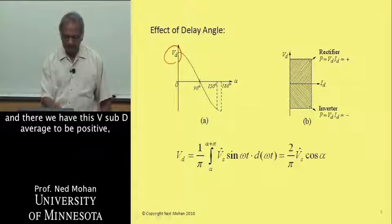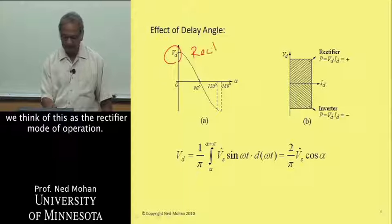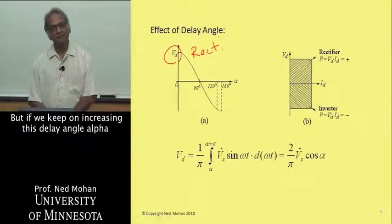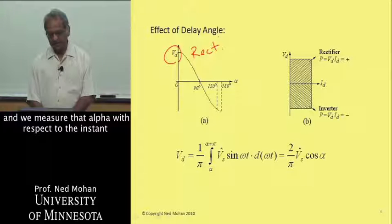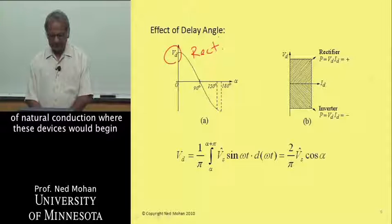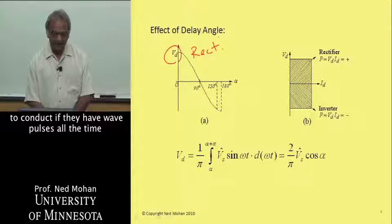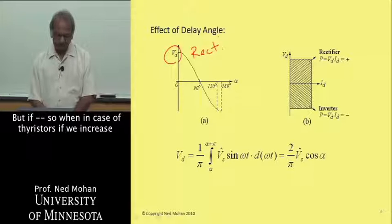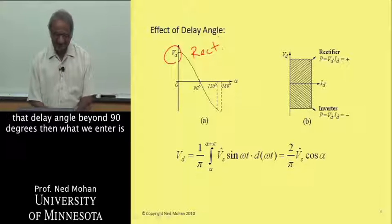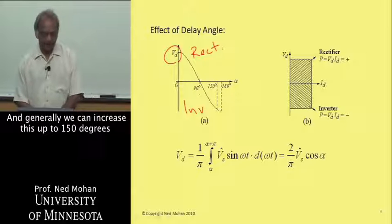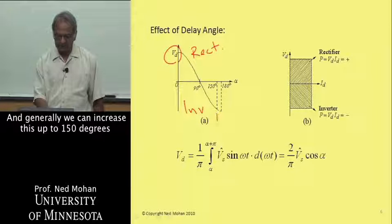When alpha is between 0 and 90 degrees, V-sub-D average is positive, and we think of this as a rectifier mode of operation. But if we keep on increasing this delay angle alpha — measured with respect to the instant of natural conduction where these devices would begin to conduct if they had gate pulses all the time or if they were diodes — if we increase that delay angle beyond 90 degrees, then what we enter is called an inverter mode of operation. Generally, we can increase this up to 150 degrees or so.